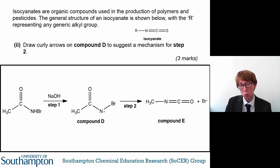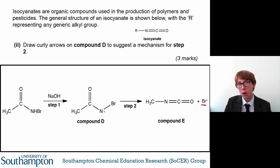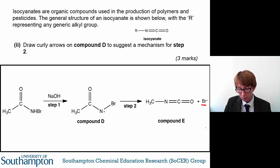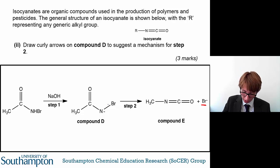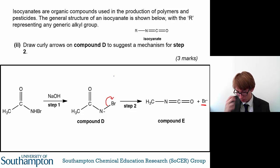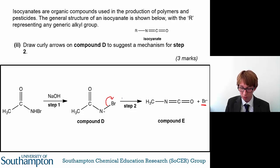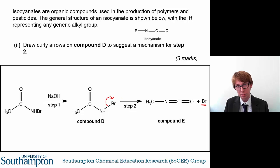The first thing that's quite clear is happening is that you've got a Br⁻ — a bromide ion left on its own — so that is no longer part of compound E. What's going to happen is the electron pair in this bond is going to be knocked onto the bromine and form a bromide ion, so it's effectively kicked out and you've lost that.